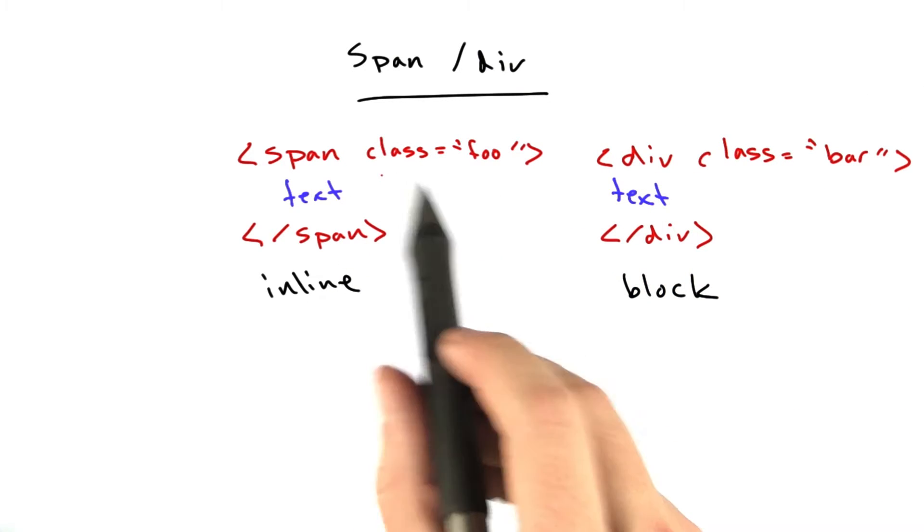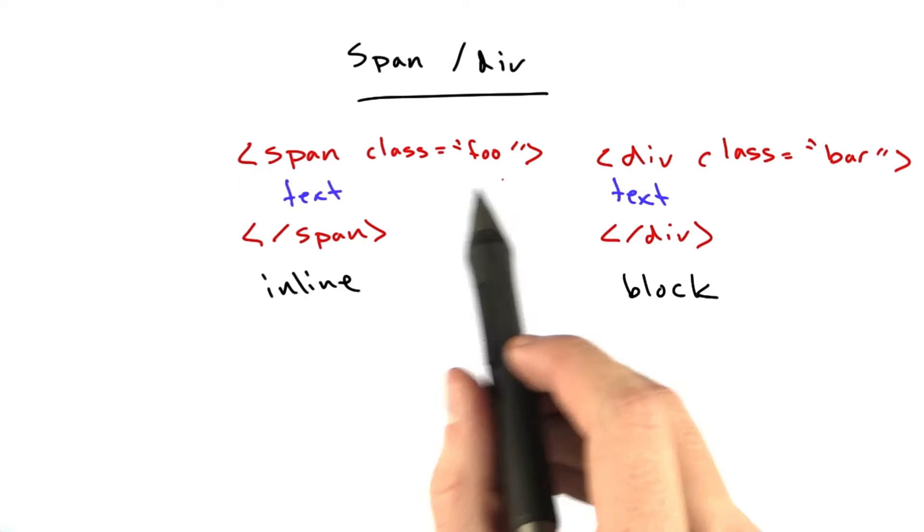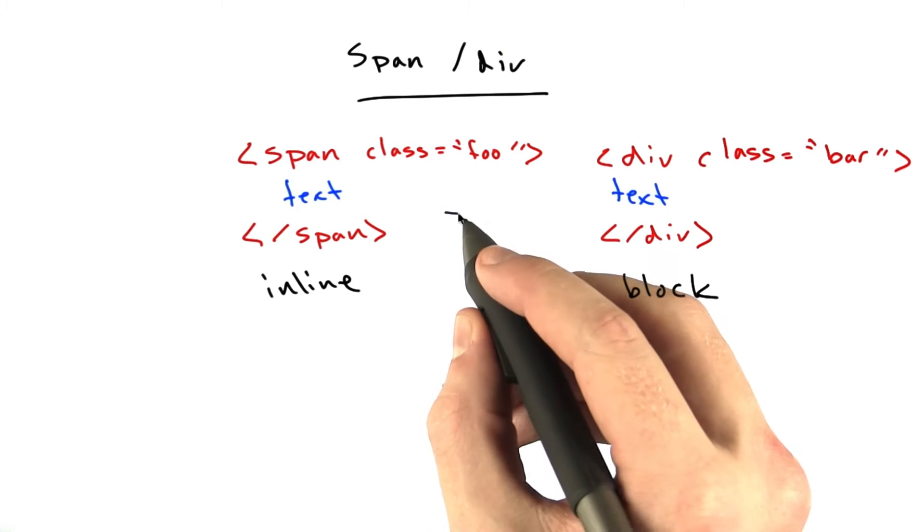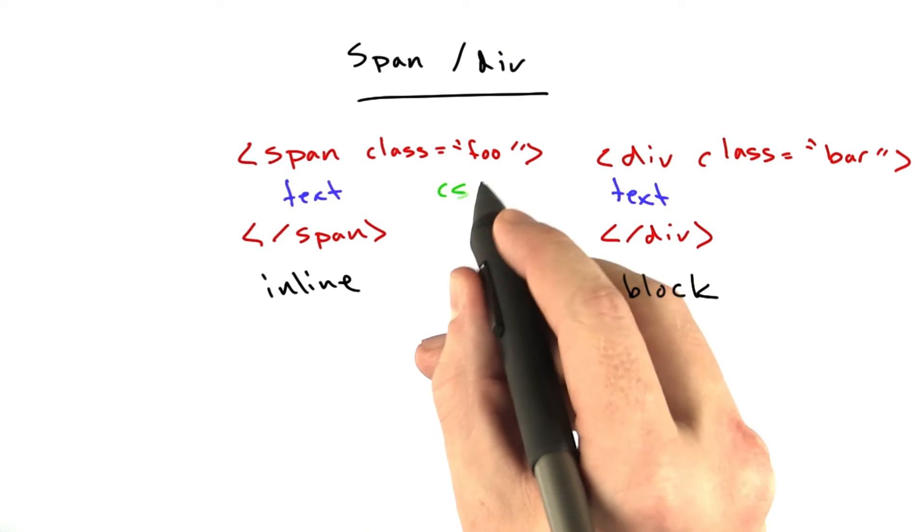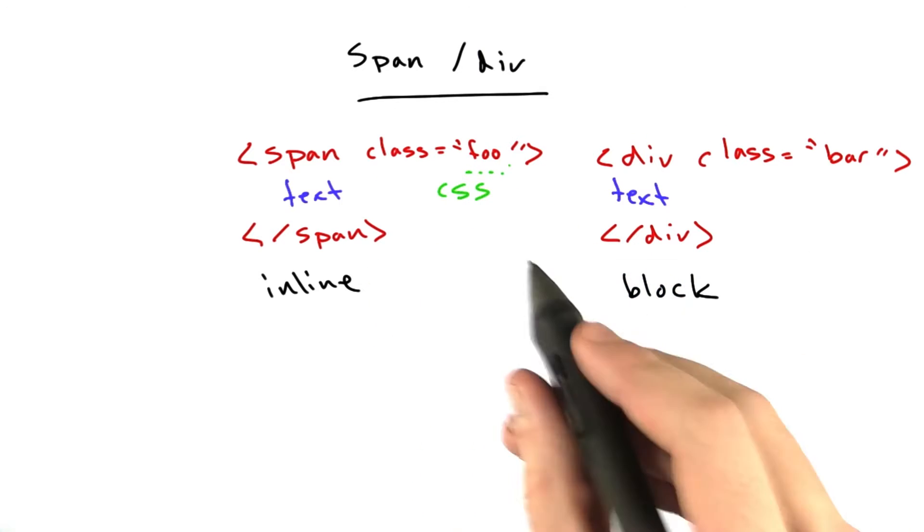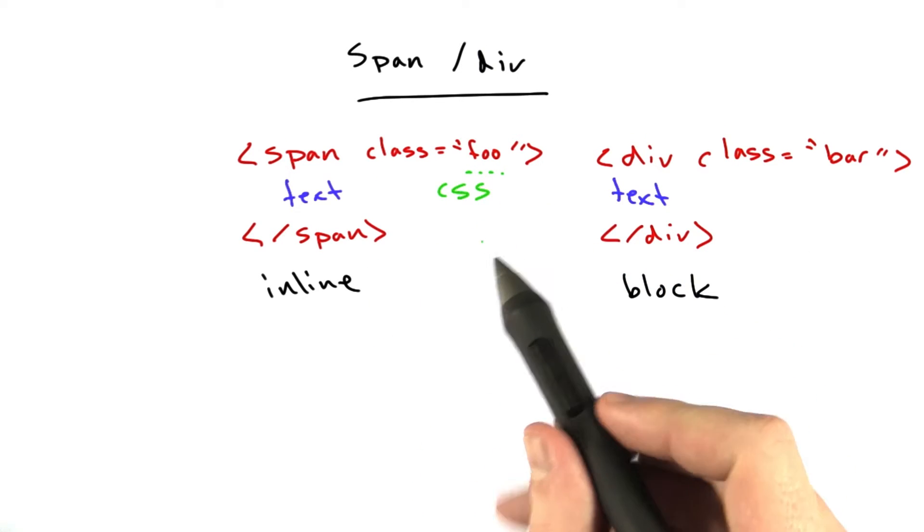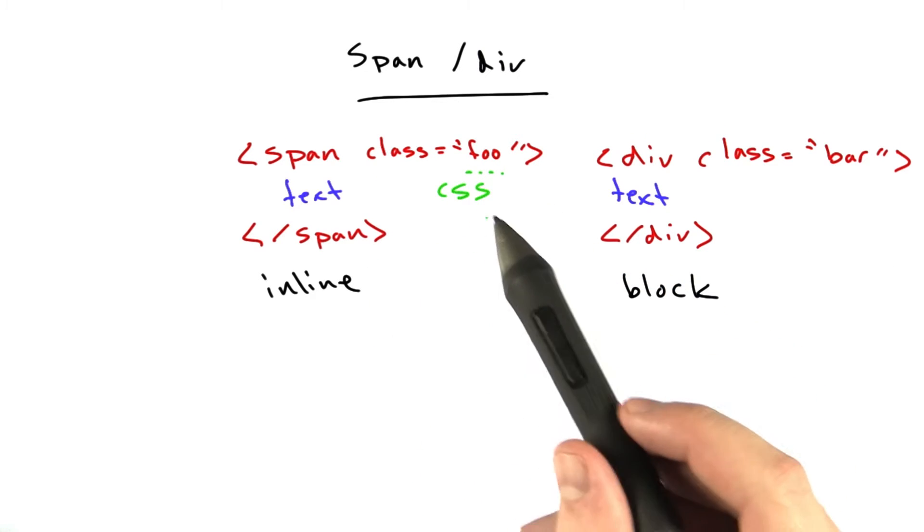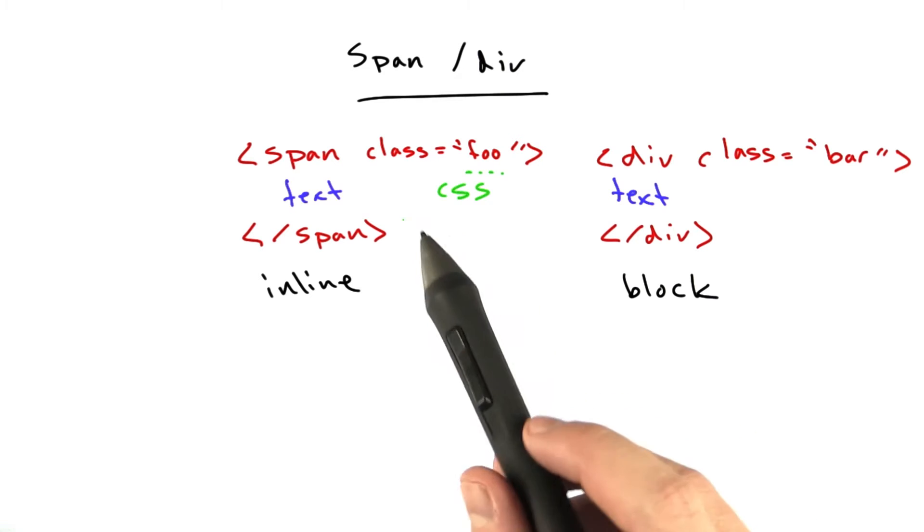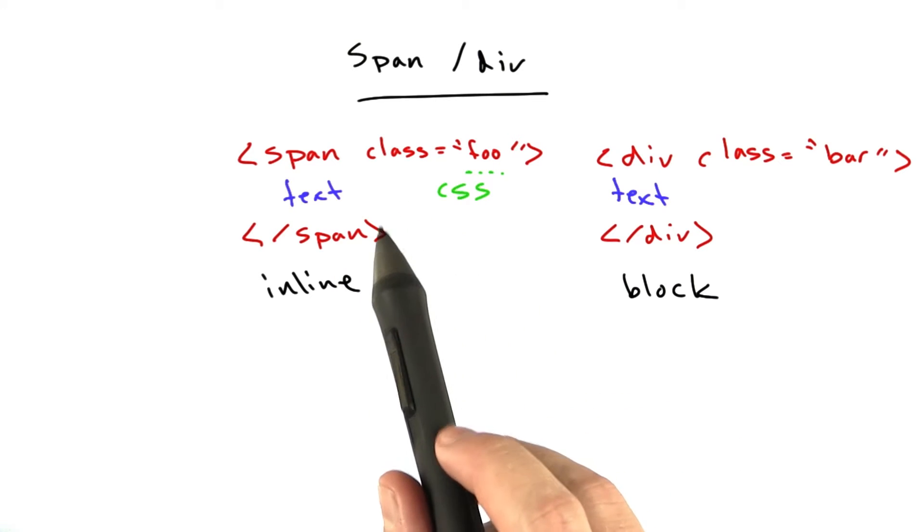So you can see I've added two attributes, or an attribute to each of these called class. And this is a CSS class, and this is not something we're going to spend a whole lot of time on in this course. I'll provide most of the CSS, but it's a separate language for adding styles to your documents or changing how different text looks.